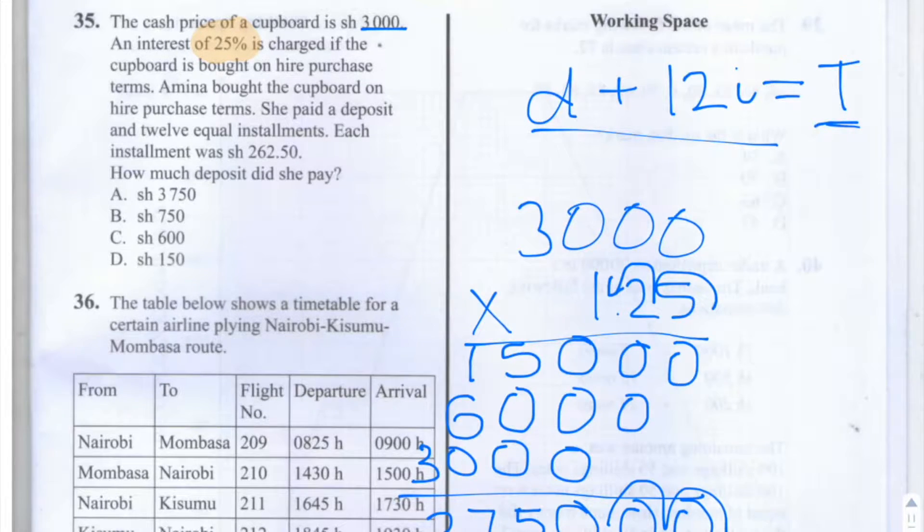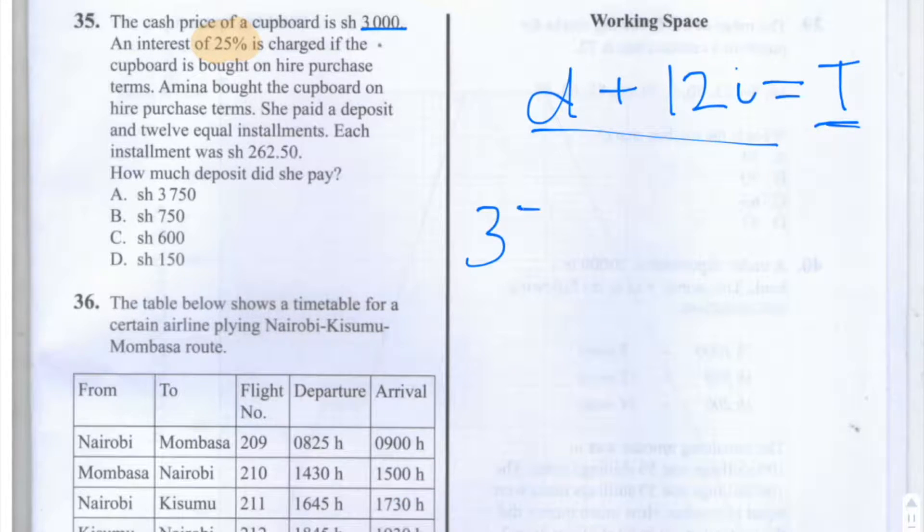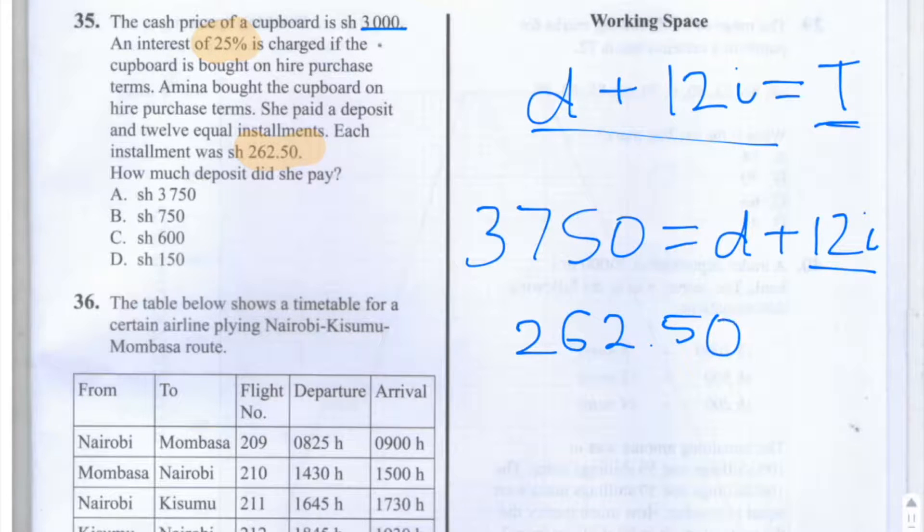So 3,750 is equal to d plus 12I. We know that I is 262.50. We need to multiply 262.50 by 12 to get the total value of 12I.